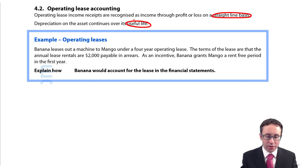So what we've got there, it says within the question: explain how Banana would account for the lease in the financial statements. So again our focus is going to be on the SFP and profit or loss. It says the Banana leases out a machine to Mango under a four-year operating lease. So it specifically says it is an operating lease in the question. In a longer narrative style question you might have to identify with additional information that it is an operating lease. Here for now I'm just concerned with the accounting treatment.